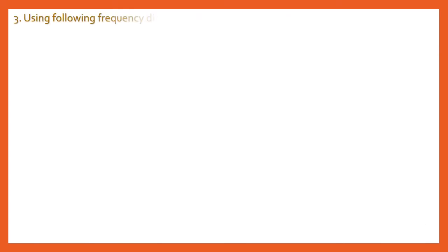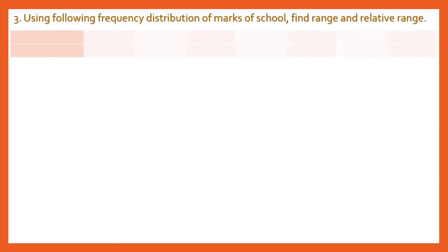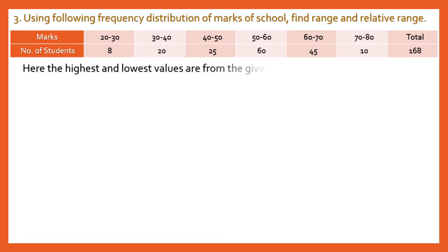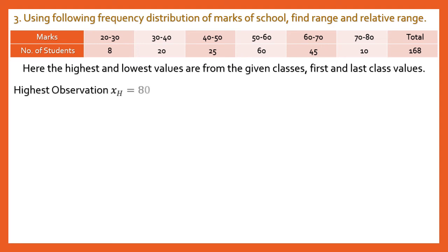Question 3: Using the following frequency distribution of marks of school students, find the range and relative range. Even if classes and frequencies are given, we don't need the frequencies for range. We only need the highest and lowest class boundary values. The lowest class is 20–30, so the lowest value is 20. The highest class is 70–80, so the highest value is 80.